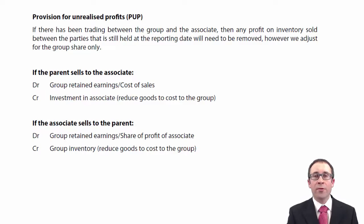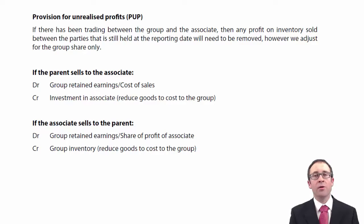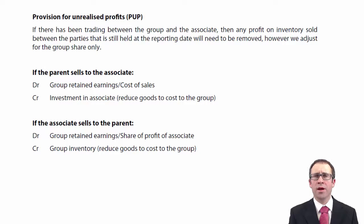Having looked at how to equity account for an associate within the statement of financial position and the statement of profit or loss and other comprehensive income, we're now going to move on to the only real adjustment that you see on top of that, which is adjusting for provisions for unrealized profit when there is trading between the group and the associates.